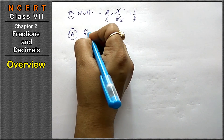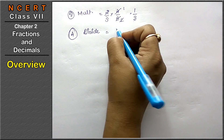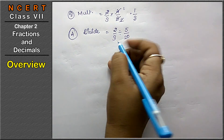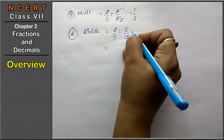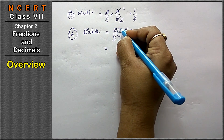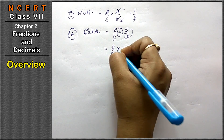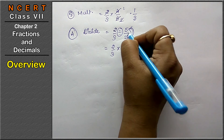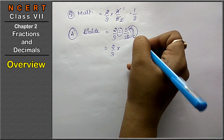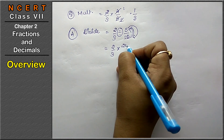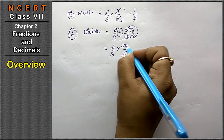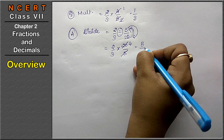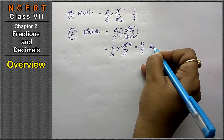For division of fractions: like 2 upon 3 divided by 5 upon 20. We use the reciprocal method — to convert division into multiplication, the denominator fraction is flipped (reciprocal). So the numerator of the second fraction goes to the denominator and vice versa. Then multiply numerator by numerator and denominator by denominator to get your answer.